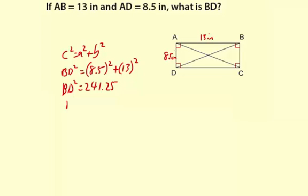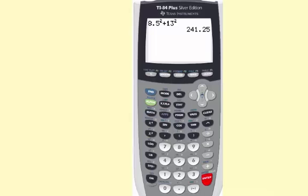So BD equals the square root of 241.25 and on this calculator, an easy way to do that is press second and then square root and then second and then answer down here. That gives you the square root of the answer it had before. Or you can just type in square root of 241.25.